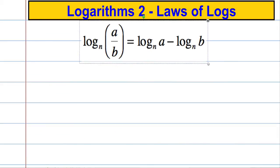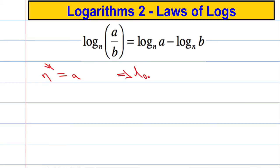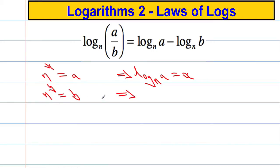Let's go for the second rule. If we take the log of A over B, we get log of A minus log of B. We start in the same way: if I have a number n raised to a power x equal to A, rewriting in log form gives log to the base n of A equals x. Likewise, n raised to the power y equals B, and in log form: log to the base n of B equals y.